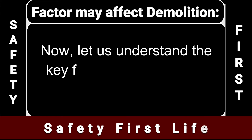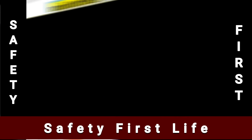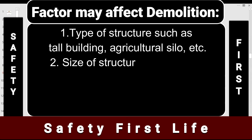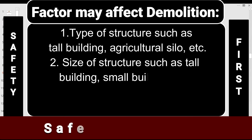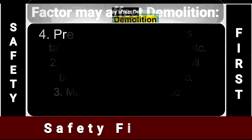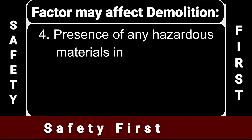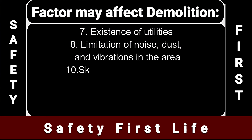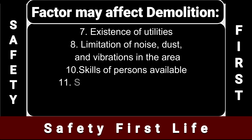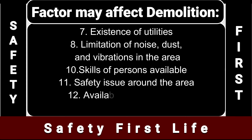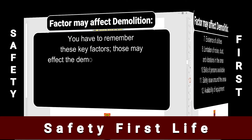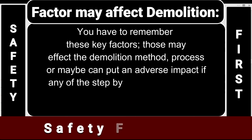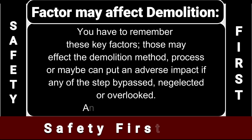Let us understand the key factors that affect the demolition method or process. Number one, type of structure, such as tall building, agricultural silo, etc. Number two, size of structure. Number three, major materials of structure, such as steel, concrete, masonry. Number four, presence of any hazardous materials in the structure. Number five, available time. Number six, location and surroundings of structure. Number seven, existence of utilities. Number eight, limitation of noise, dust, and vibrations in the area. Number ten, skills of persons available. Number eleven, safety issues around the area. And number twelve, availability of equipment. These twelve key factors may affect the demolition method and process, and may have an adverse impact if any steps are bypassed, neglected, or overlooked.